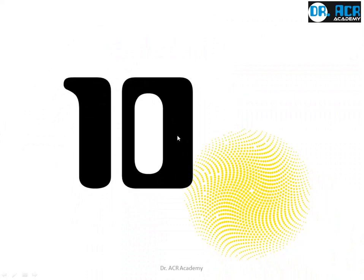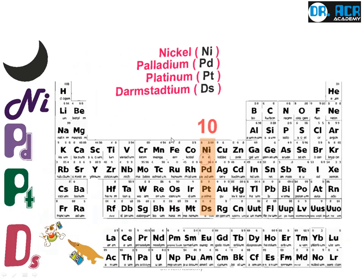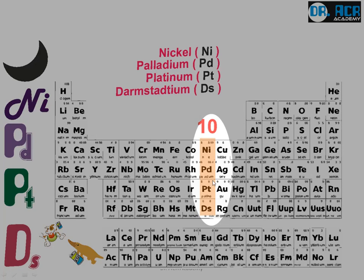Now we come to the tenth group. There were two friends who wanted to party, but said they would party only during the night, not in the daytime. They were a painting dog and a platypus. Someone said: painting dog, platypus, you should celebrate the party by drinking soda. Night, painting dog, platypus, drinking soda. This is how it is linked to the periodic table, and these are its real names.